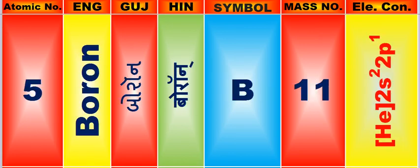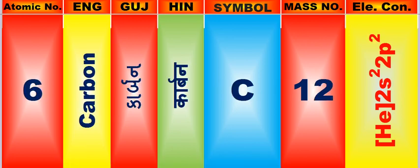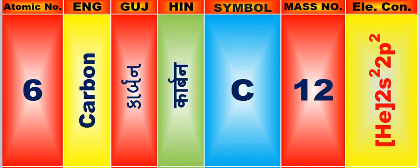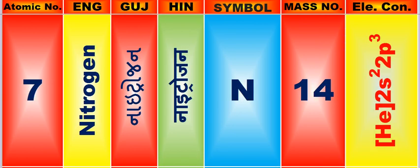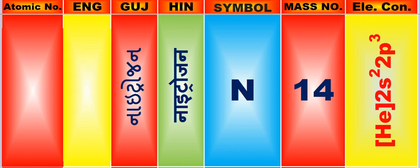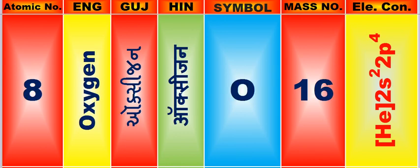Atomic number is 5, name of atom is Boron. Atomic number is 6, name of atom is Carbon. Atomic number is 7, name of atom is Nitrogen. Atomic number is 8, name of atom is Oxygen.